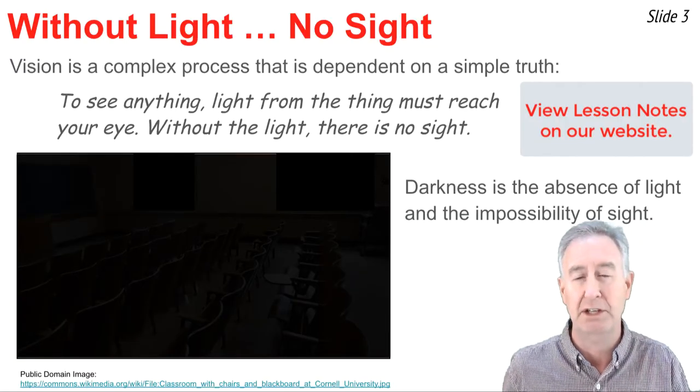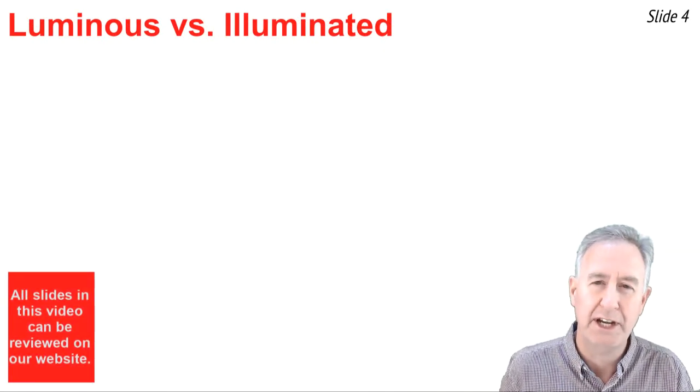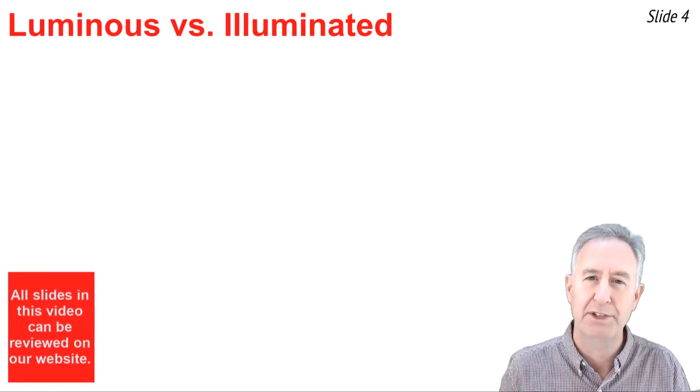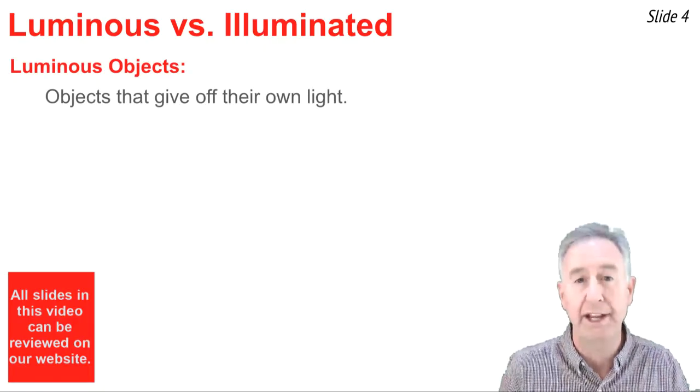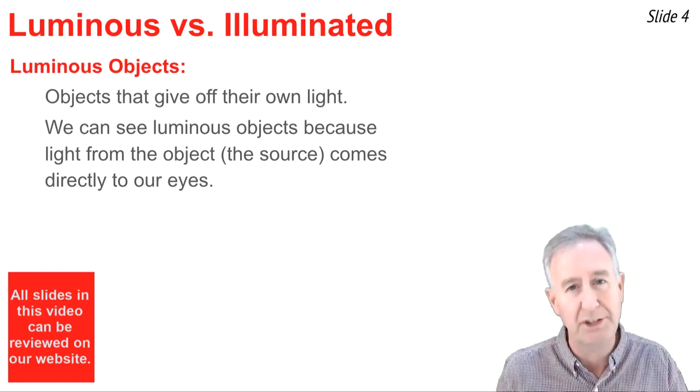That emphasizes the importance of light to sight. This brings up the distinction between luminous objects and illuminated objects. Luminous objects are objects that give off their own light. We see luminous objects because the light from the object comes directly to our eye.